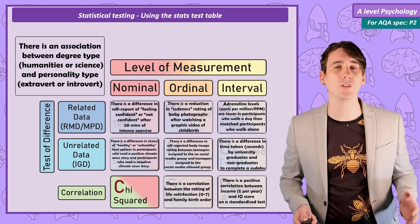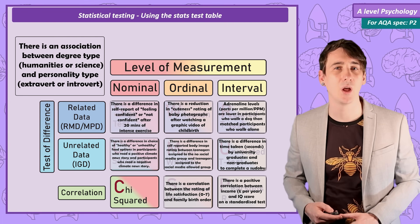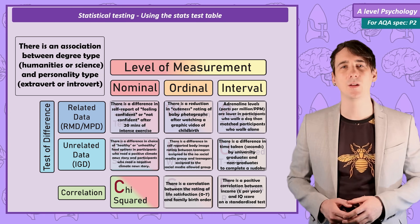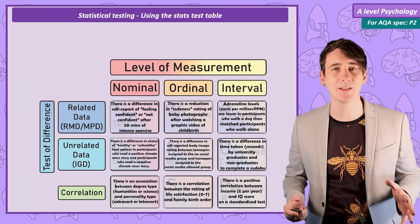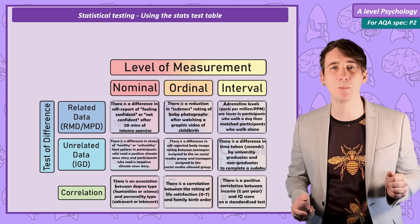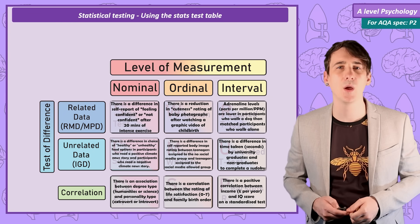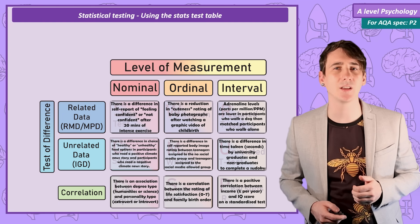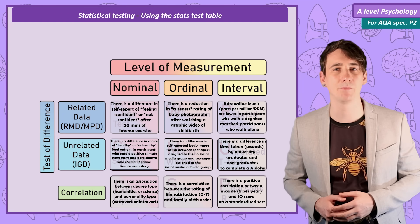Example 9: the researcher will again use chi-squared, this time for a correlation, but the data is at the nominal level. So from that task, you should now be able to identify the stats test that needs to be used based on the details given in the exam. But you also need to be able to actually answer a stats test question in a way that will maximise your marks. Let me show you how.